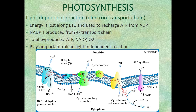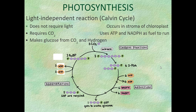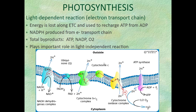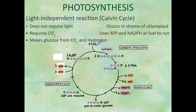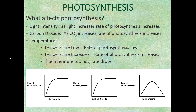The light-dependent reactions require light, so they can only happen during the daytime. The light-independent reactions don't require light — that doesn't mean they can't happen in the light; they happen all the time, day and night. This means the light-independent reactions run faster overall, but the light-dependent reactions catch up during the day. When the sun comes up, the light-dependent reactions start and the Calvin cycle is ready to go.